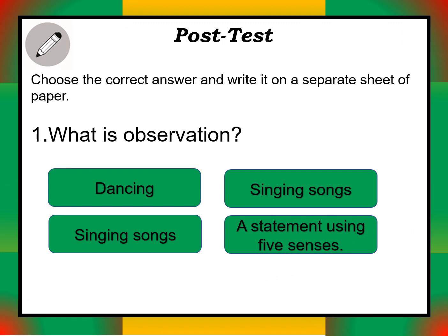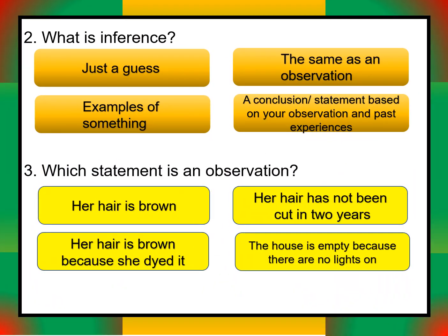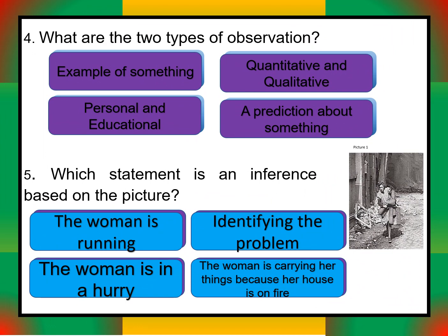Take the post-test and write your answers on a separate sheet of paper. Choose the correct answer for: what is observation; what is inference; which statement is an observation; what are the two types of observation — quantitative and qualitative; and which statement is an inference based on the picture — the woman is running, the woman is in a hurry, or the woman is carrying her things because her house is on fire.